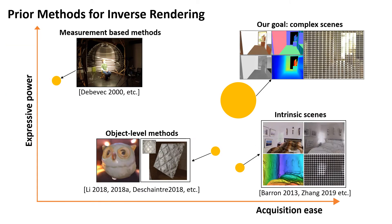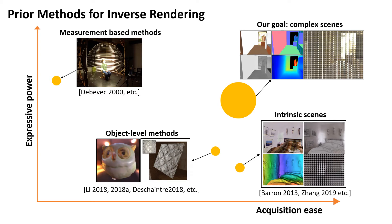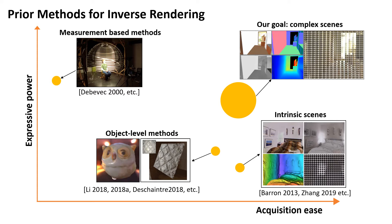Early works on inverse rendering use expensive and calibrated devices. Subsequent works reconstruct shape and material from a single image, but are limited to objects. For scene-level inverse rendering, prior works only solve a subset of the problems.